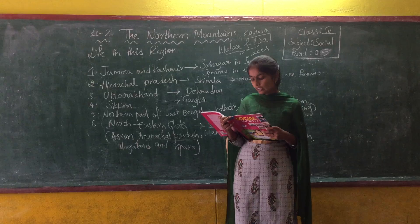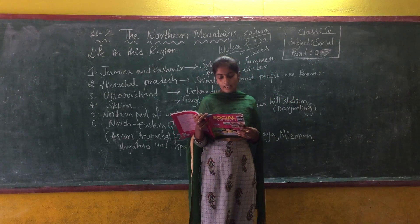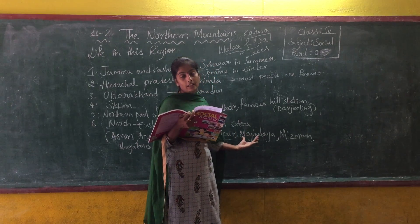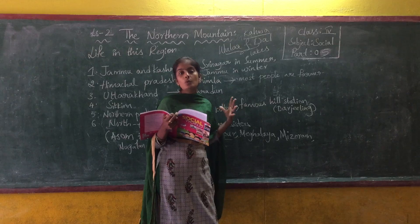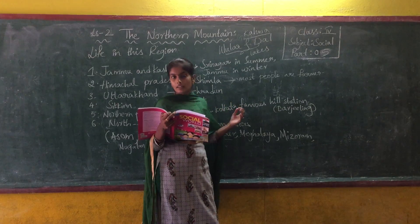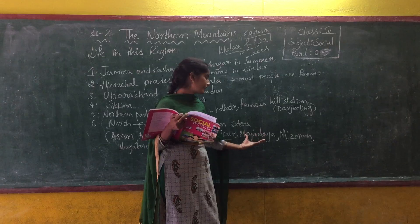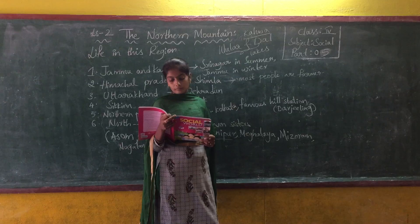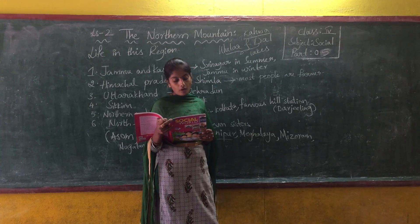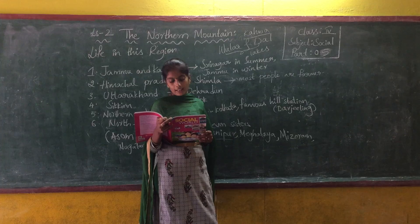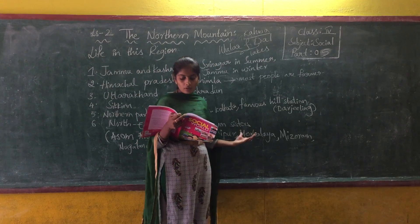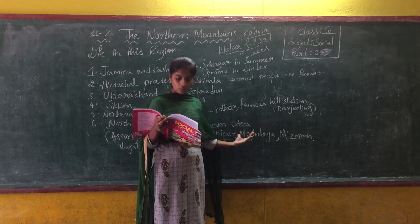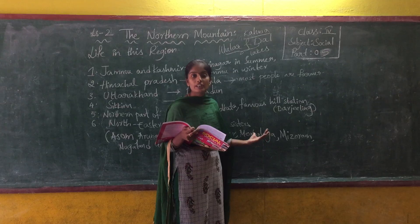Meghalaya is the state which receives the heaviest rainfall in India. It is one of the Seven Sisters and receives very heavy rainfall throughout the year. Meghalaya means the abode of clouds. The capital of Meghalaya is Shillong.